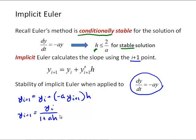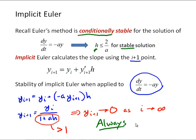And a is a positive number, h is a positive number, so this denominator is always going to be greater than 1, which means that y_{i+1} is always going to go to 0 as we move forward in time or as i goes to infinity. And the bottom line here is that implicit Euler is always stable for this differential equation. And that conclusion is generally true that implicit methods are generally going to be more stable.